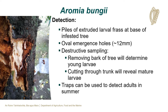Aromia bungii can be detected by the following methods: piles of extruded larval frass at the base of an infested tree; oval emergence holes approximately 12 mm in size. Once larval frass or an emergence hole has been identified, destructive sampling can be carried out by removing the bark of the tree to determine if young larvae are present. Cutting through the trunk will reveal mature larvae. Traps can also be used to detect adults in the summertime.